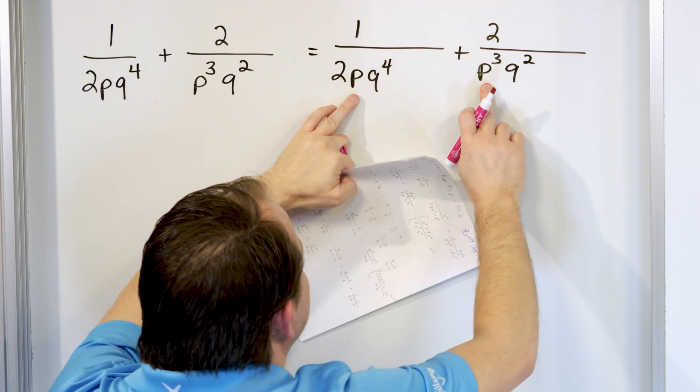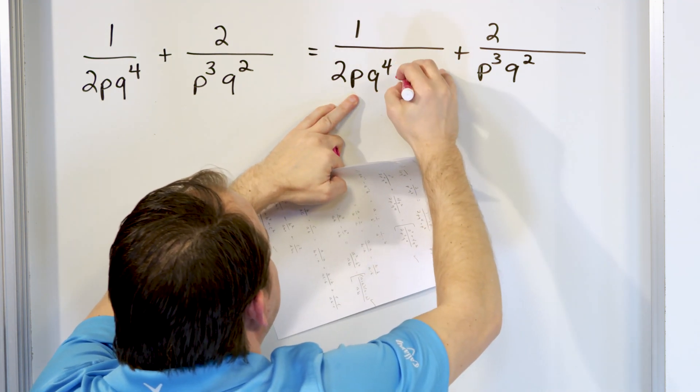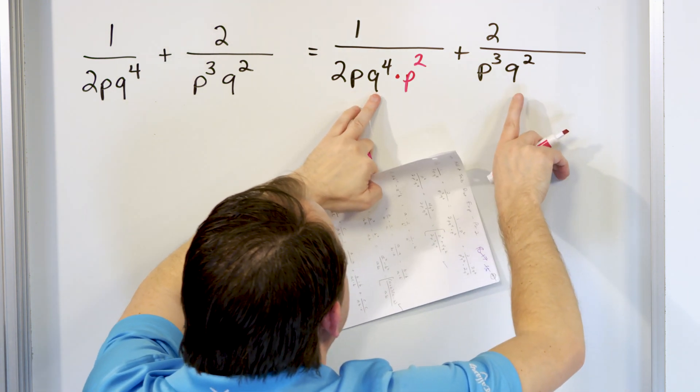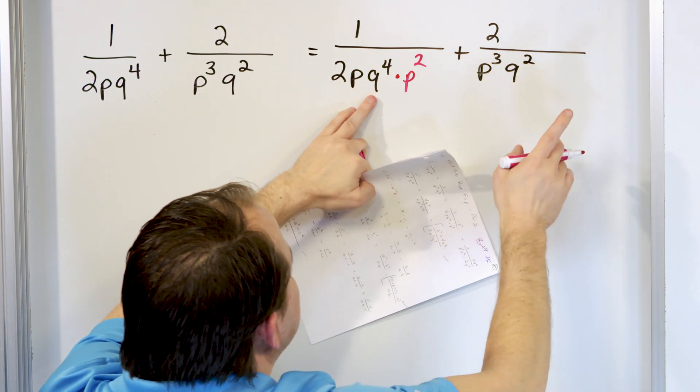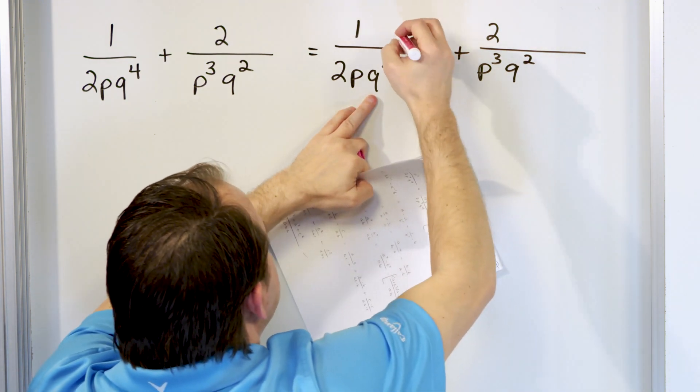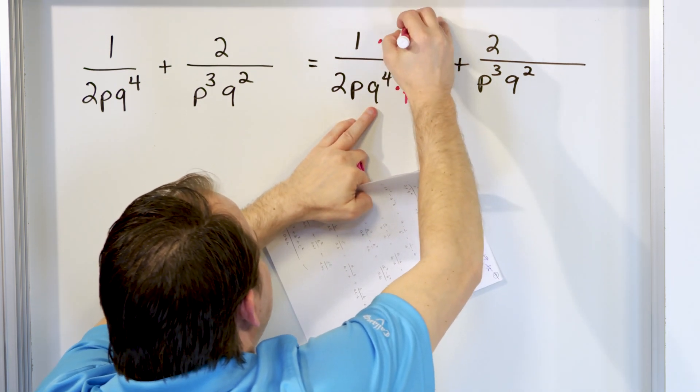That'll give me a p cubed. Now, the 2 and the q to the 4th I can't do anything with because I actually have less of them over here. So what I'll do is since I'm multiplying by p squared, I'll multiply the top by p squared. And then over here, I'm going to have to multiply to get the same thing.